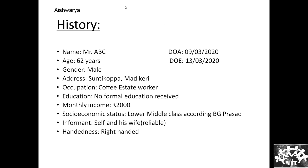We have a 62-year-old male, Mr. ABC, who hails from Suntikoppa, Madikeri and works in a coffee estate. He has received no formal education and has a monthly income of rupees 2000. He belongs to the socio-economic status of lower middle class according to B.T. Prasad. The history is given by him.